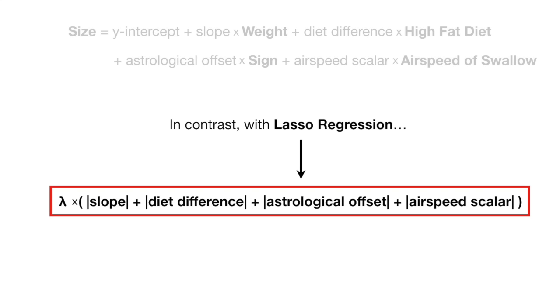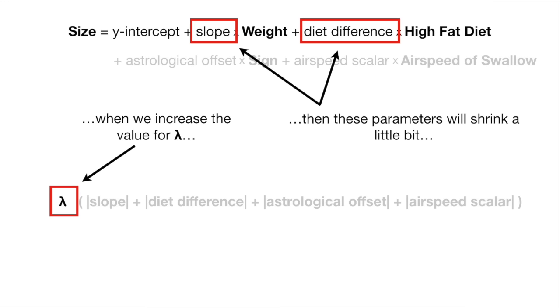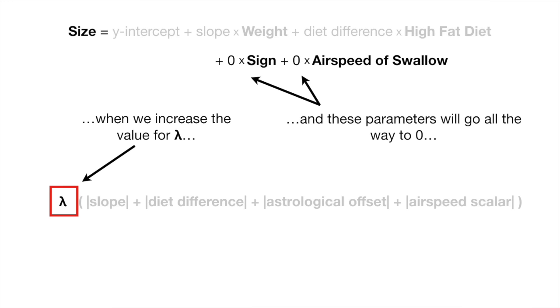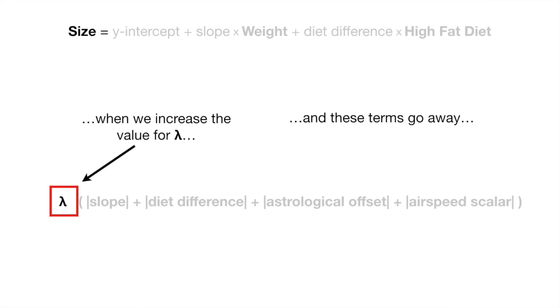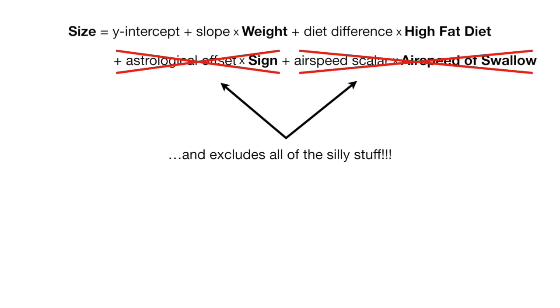In contrast, with Lasso Regression, when we increase the value for lambda, then these parameters will shrink a little bit, and these parameters will go all the way to zero. And these terms go away. And we're left with a way to predict size that only includes weight and diet, and excludes all of the silly stuff.